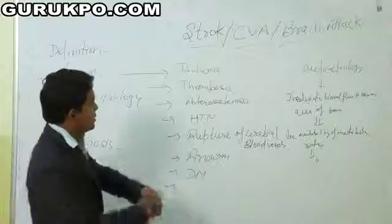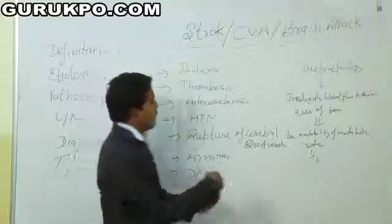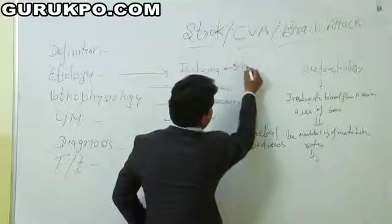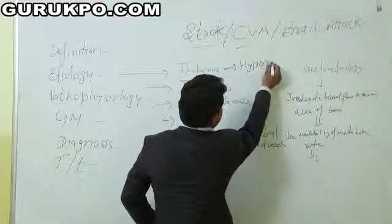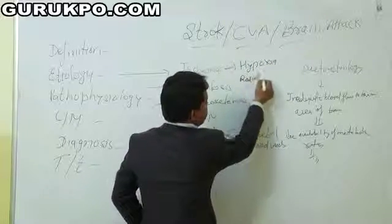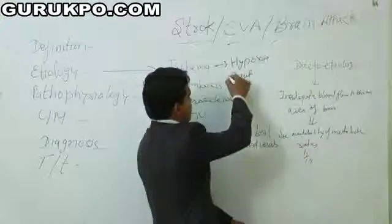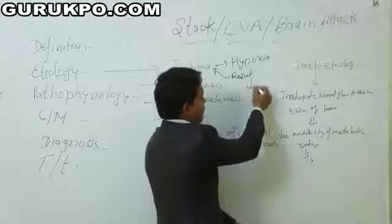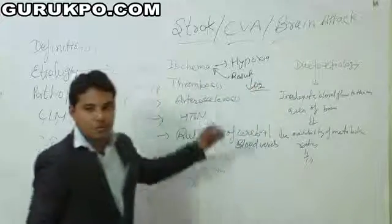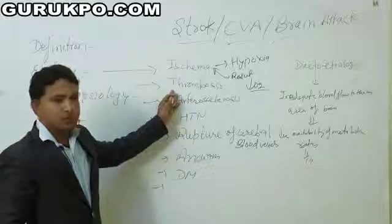The first is ischemia. Ischemia is a condition where ischemia leads to hypoxia, that results in lack of O2. Decreased O2 level in the brain tissues is called the ischemic condition.